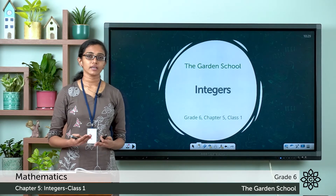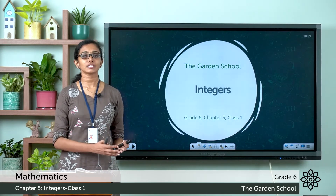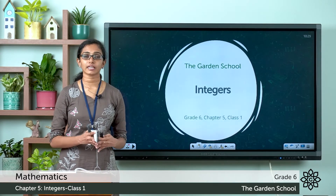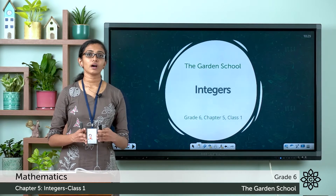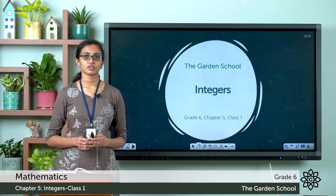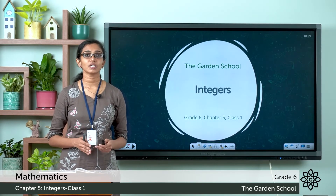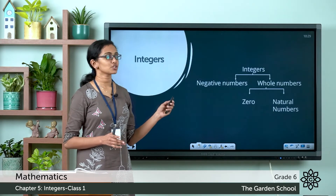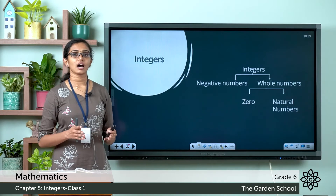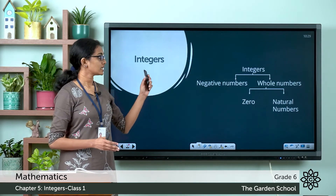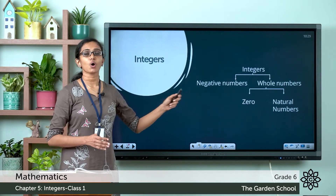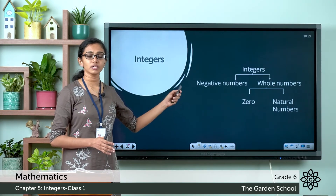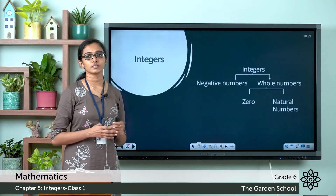So what do you call it when you add the negative numbers to the set of whole numbers? That new set will have negative numbers, 0, and positive numbers. You call that the set of integers. So integers are numbers including negative numbers and whole numbers — that is, negative numbers, 0, and the natural numbers.